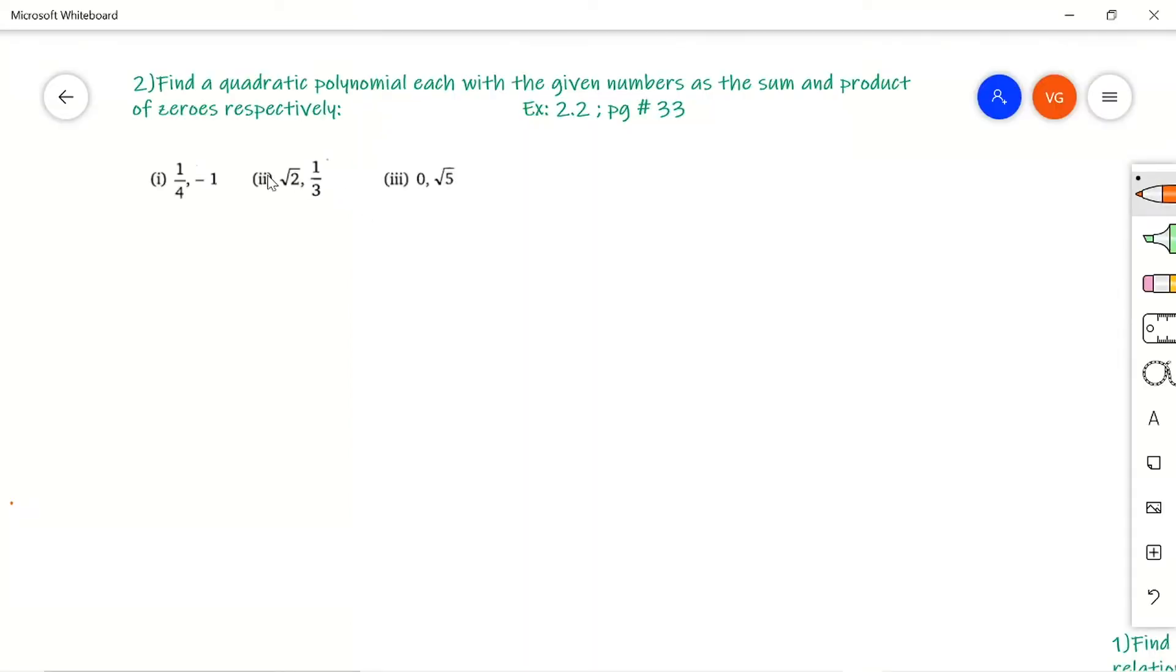This is the second problem from exercise 2.2, page number 33. Find a quadratic polynomial each with the given numbers as the sum and product of zeros respectively.